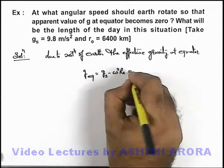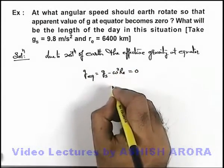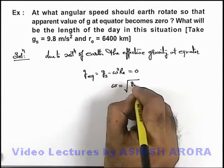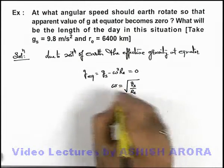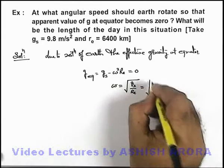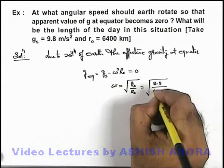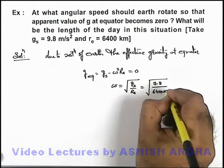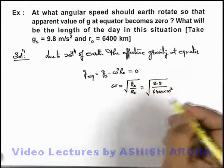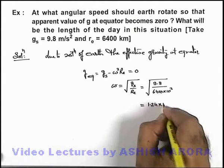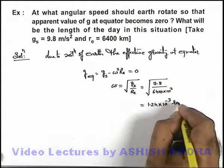And we are given that it should be equal to zero, that implies that angular speed of rotation should become root of g_s over r_e. We substitute the values, this will be root of 9.8 by 6400 into 10 to power 3. On simplifying we'll get this value to be 1.24 × 10^-3 radian per second.